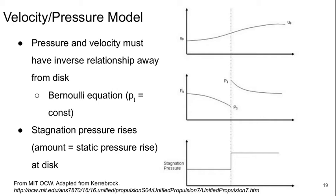we have the velocity plot again at the top where we have a continuous increase in velocity. And because it's only at the disk that the stagnation pressure is changing, away from the disk, Bernoulli's equation must hold, so the stagnation pressure is constant.